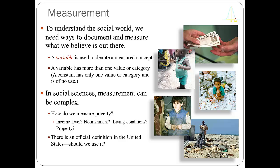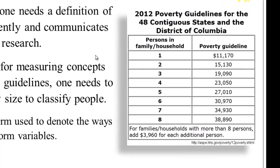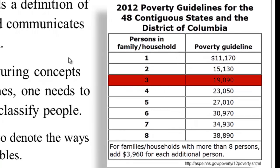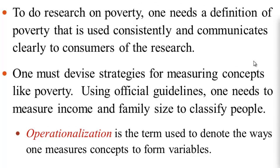In the United States, there is an official definition of poverty, and we could use that definition even though it may not be suitable for all purposes. For example, the official U.S. government definition of poverty in 2012: if you are in a family household of three people, the poverty level is $19,090. If your household income is lower than that, then you are in poverty; if it is above that, then you are not. To use these measurements, one needs to know family income and family size to operationalize the concept of poverty.